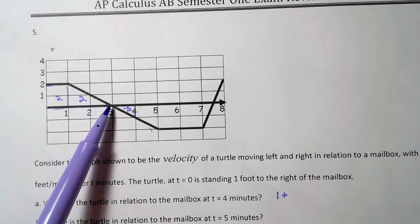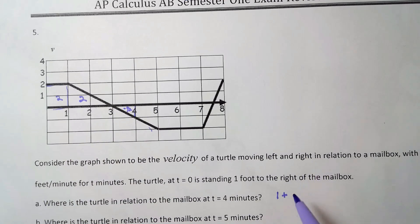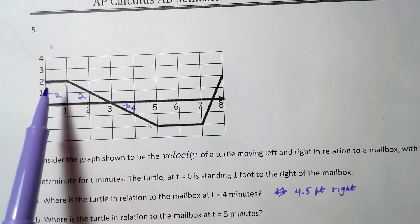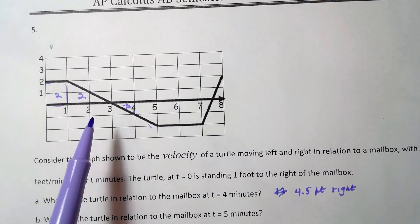And then he turns around and starts heading the other direction, and so we subtract that out. So anyway we would say that he's 4.5 feet to the right. Why? Because the area above is greater than the area below. Okay, so he's still to the right. If the area below would be greater, then we'd say he's to the left.